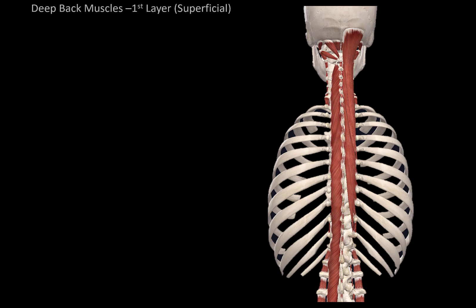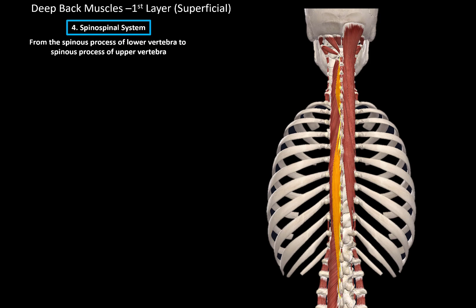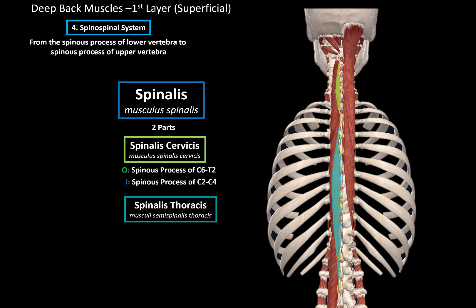Now let's do the first layer, the most superficial layer just underneath the superficial muscles of the back. The spinospinal system goes from the spinous process of the lower vertebrae to the spinous process of the upper vertebrae — these muscles are called spinalis muscles, made up of two muscles. The spinalis cervicis originates from the spinous process of C6 to T2 and inserts at the spinous process of C2 to C4. The spinalis thoracis originates from the spinous process of T10 to L3 and inserts at the spinous process of T1 to T8.